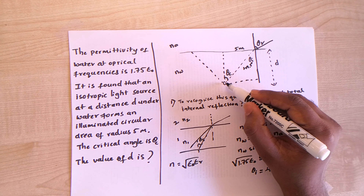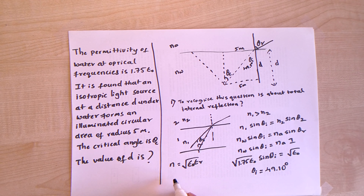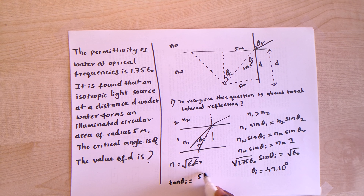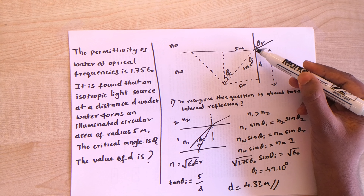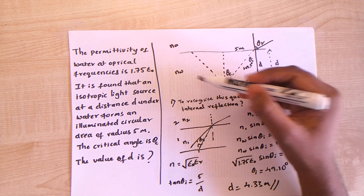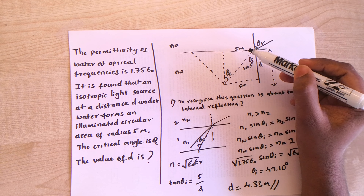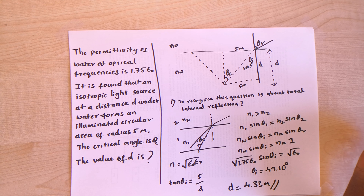Now we know theta_i = 49.1 degrees and the radius on the surface is 5 meters, so we use tangent: tan(theta_i) = 5 / d. Solving this gives d = 4.33 meters. So the light source is at a depth of 4.33 meters from the surface, forming an illuminated circle with radius 5 meters. Please subscribe to our channel — we'll come up with more problems like this. Thank you!